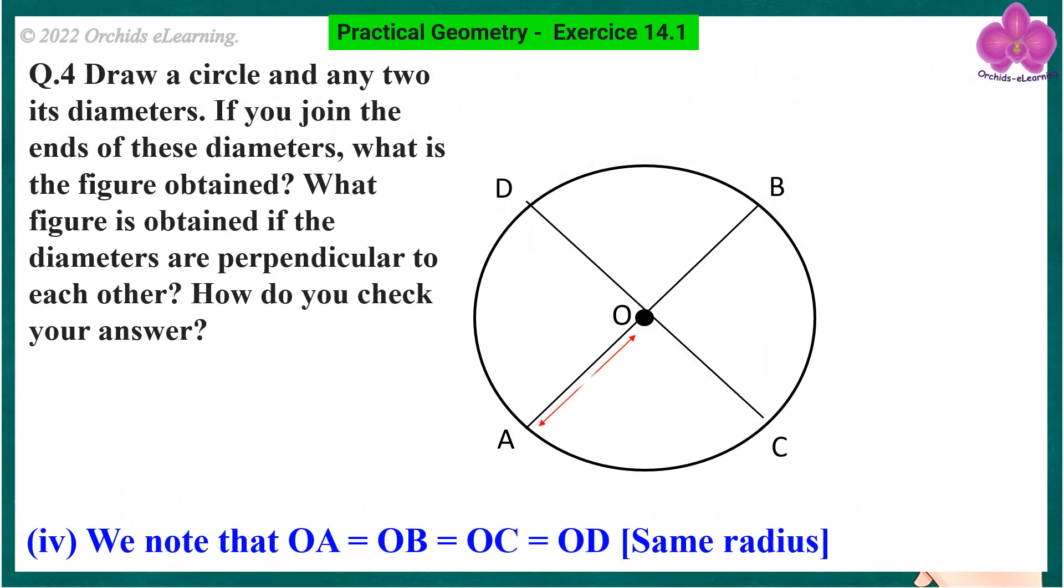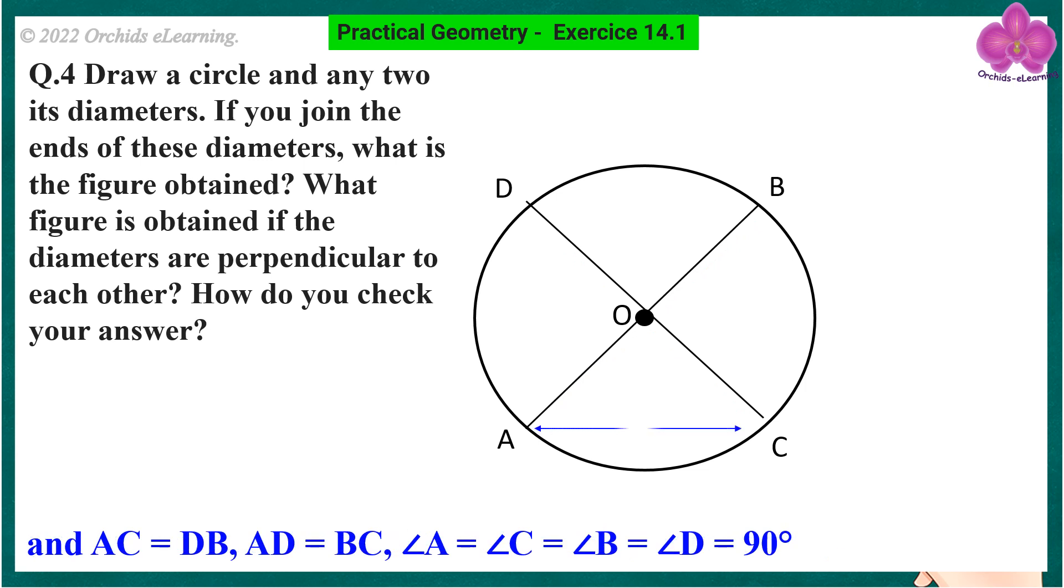We note that OA equals OB equals OC equals OD are same radius. And AC equals DB, AD equals BC. Angle A equals angle C equals angle BA equals angle BD equals 90 degrees.